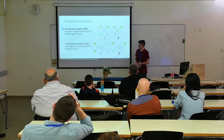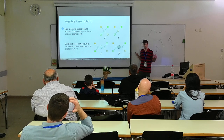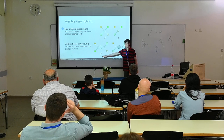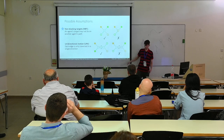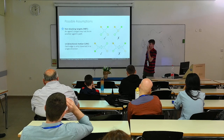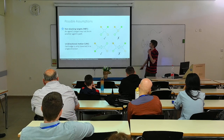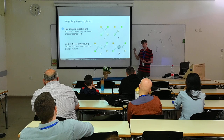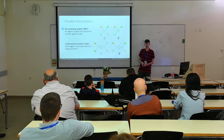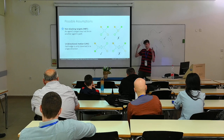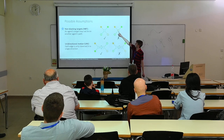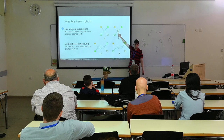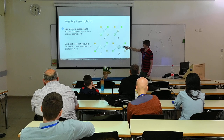Another assumption is unidirectional motion — intuitively, each lane has a direction, meaning each edge in the graph is traversed in only one direction. In case you're wondering why this problem is hard: without these assumptions we get precedence constraints. For example, the constraint that R1 has to pass R0's target before R0 gets there. If we have many such constraints, the problem becomes harder.